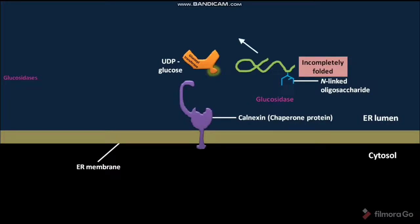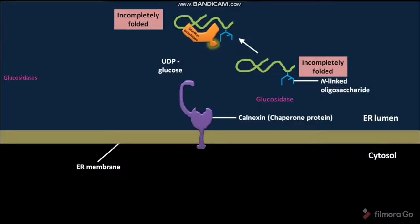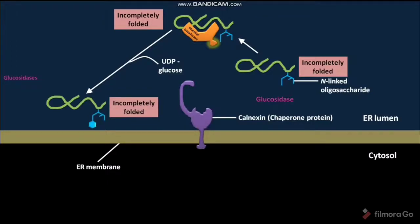In the next step, if the protein is still in an incompletely folded state, glucosyl transferase binds to it. In the presence of glucosyl transferase, the incompletely folded protein and UDP-glucose react with each other, forming an incompletely folded protein with an added glucose molecule to its N-linked oligosaccharide, and UDP. This glucose addition is called glycosylation.